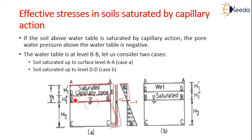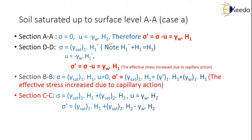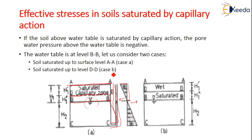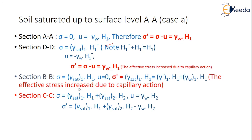At section DD (where h1'' is the distance from DD to the water table, and h1'' + h1' = h1): sigma = gamma_sat1·h1''. The pore water pressure is negative due to capillary action: u = −gamma_w·h1''. The effective stress sigma' = sigma − u is increased due to the capillary action.